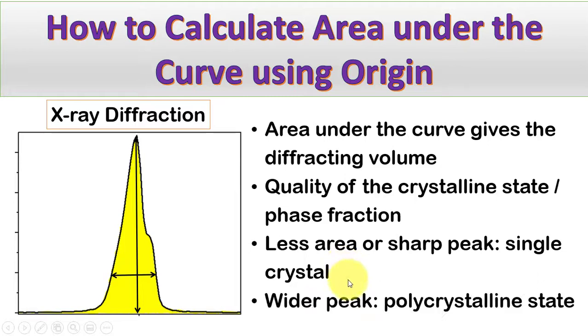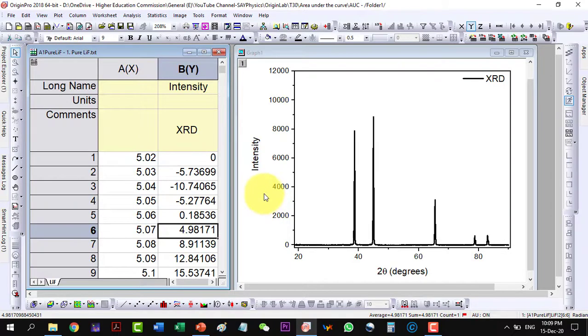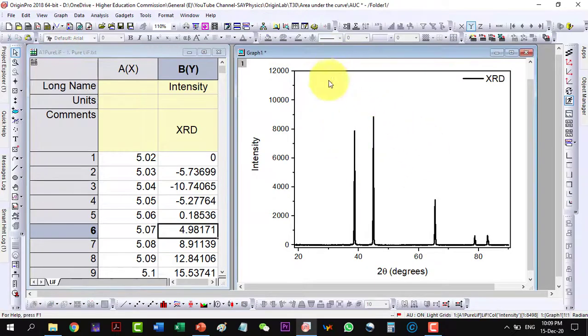Now, in order to calculate area under the curve, I am plotting this XRD data here. I will now find the area under these curves. So I can focus on a specific curve or all the curves at the same time. To find area under the curve, I will have to go to Analysis.